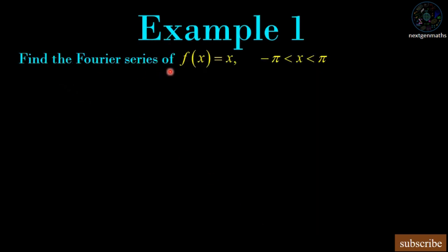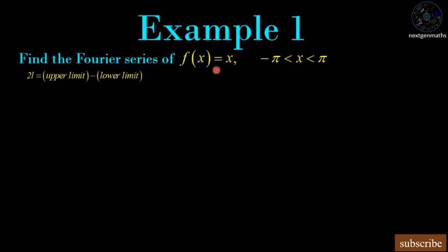Example 1: Find the Fourier series of f(x) = x for −π < x < π. First we find 2L: it equals upper limit minus lower limit, so π − (−π) = 2π. Therefore L = π and c = −π.